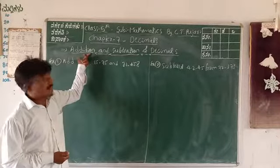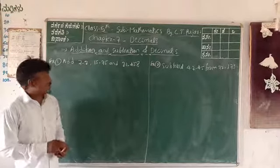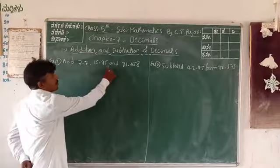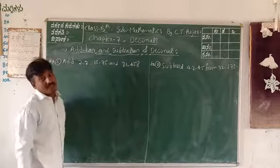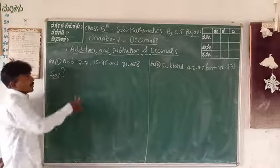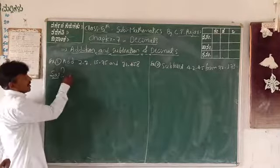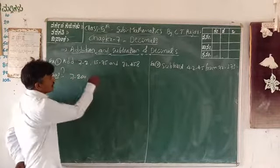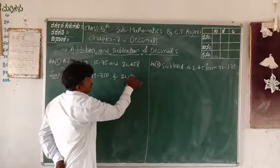Today you will learn about addition and subtraction of decimals. The first example is addition of decimals. There are three numbers given. All three decimal numbers are unlike decimals. You need to find the like decimals — the one with the most decimal places has three decimal places. So: 7.200, 15.750, and 21.545 (21.458).